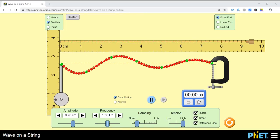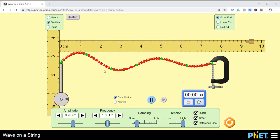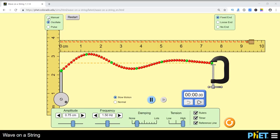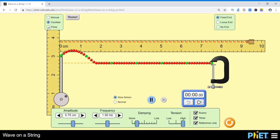Let me first explain how we are going to change various parameters. Here we have the facility to manually produce a wave or to oscillate, and we can also give it a pulse. We can change the amplitude of its variations, pulse width, damping, tension of the string, and here is the ruler.